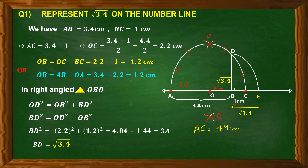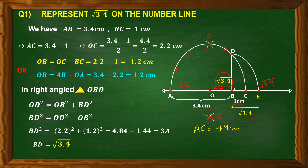With O as center and radius 2.2, draw a semicircle on AC. At point B, construct a perpendicular which cuts the semicircle at D, so BD equals √3.4. With B as center and radius BD, draw an arc cutting the number line at E. Point E represents √3.4 on the number line, and distance BE equals √3.4 centimeters.